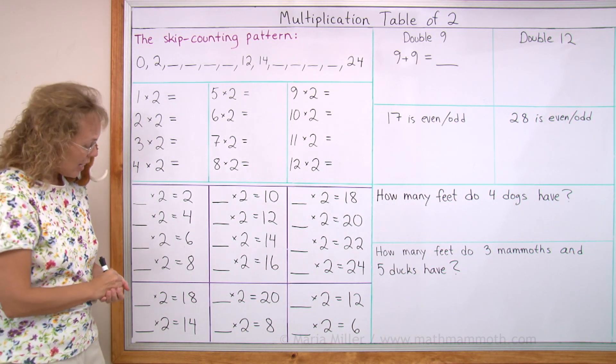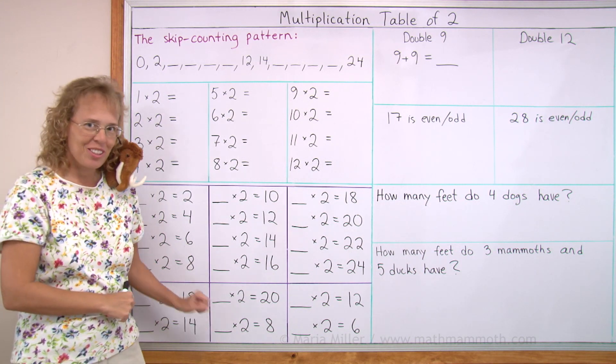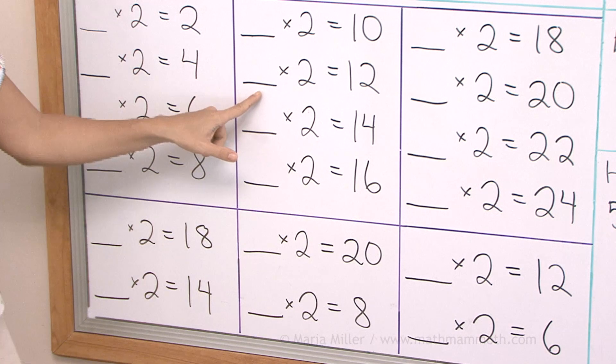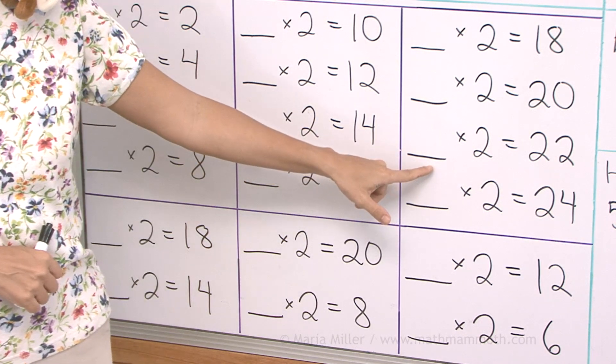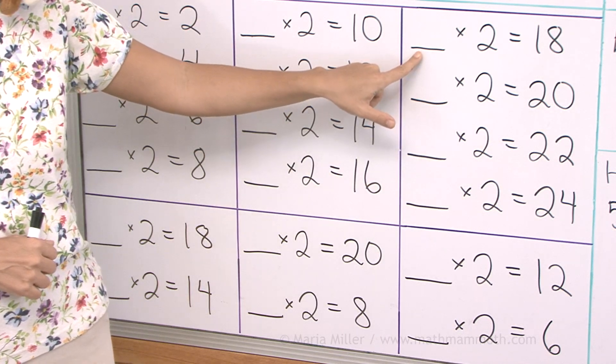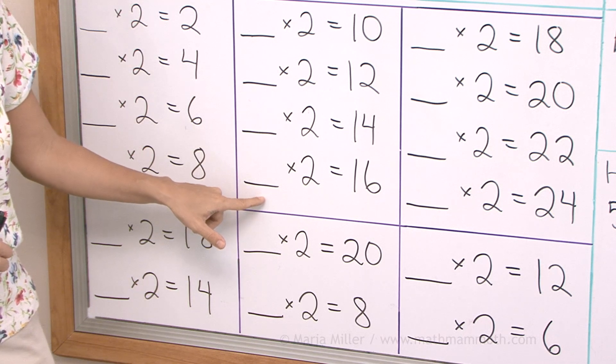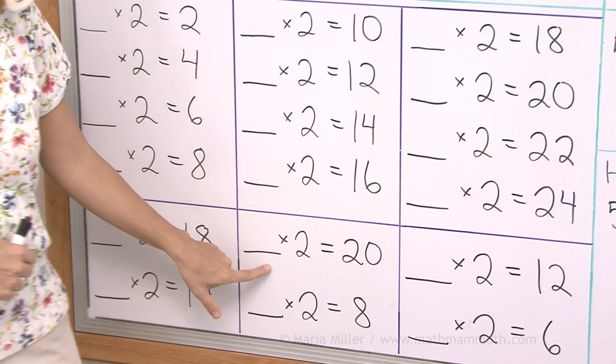We'll do the same drill. And we'll go to these problems too because they are not in order. How many times two is 12? 6. How many times two is 22? 11. How many times two is 18? How many times two is 16? 8. How many times two is 8? 4.